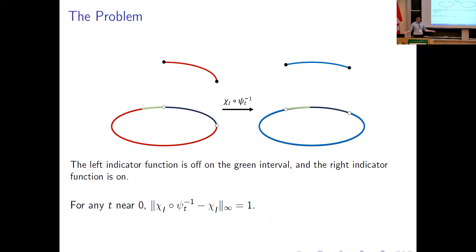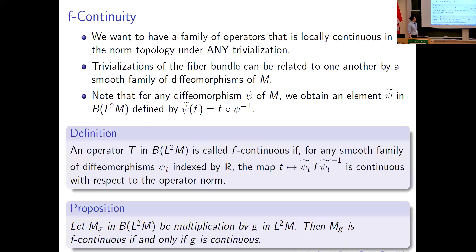This is a weird issue: I've given an example of a constant family associated to a fiber bundle, but it's not continuous under this local trivialization. This is really what can go wrong when you're trying to assign a family of operators to a fiber bundle. So how do we fix it?